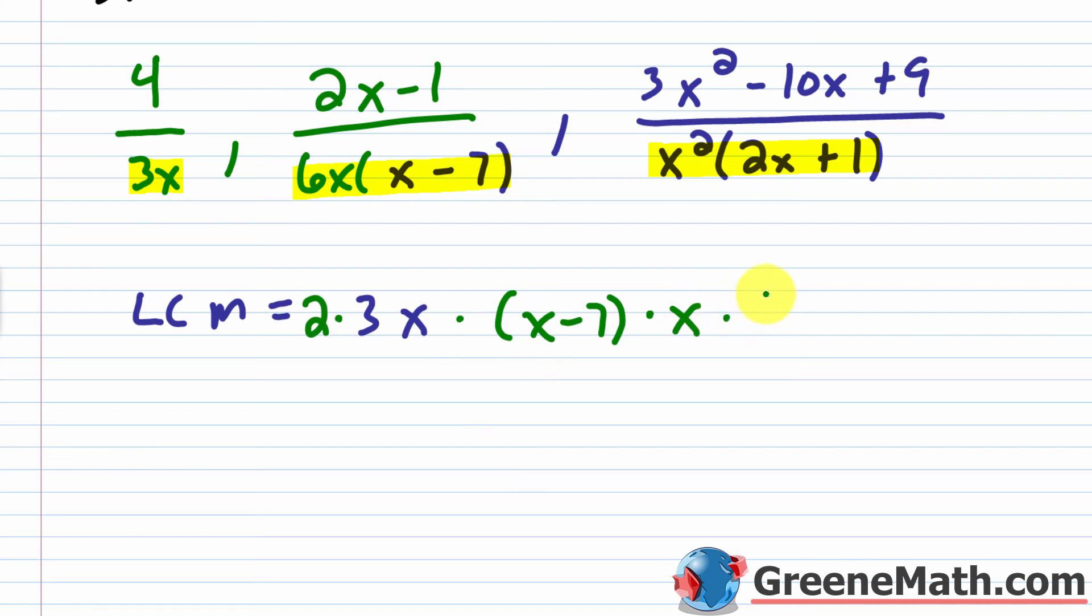And then I have this quantity here of 2x plus 1. That's nowhere else. So I just throw it in. So everything goes in, every factor goes in. The only exception to that is if there's a repeat, you go with the largest number of repeats. So that's the main thing here.